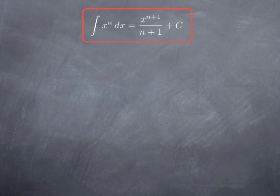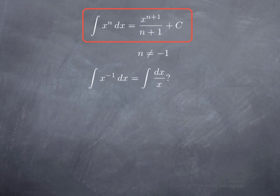This is true for every n except that, as you can see in this formula, we divide by n plus 1, which means we implicitly assume that n is not negative 1, because of course we cannot divide by 0. So what if we want the anti-derivative of x to the negative 1 — in other words, the anti-derivative of 1 over x?